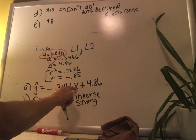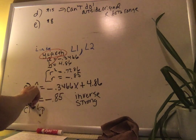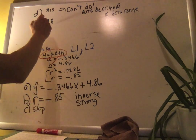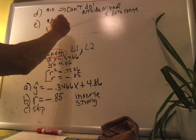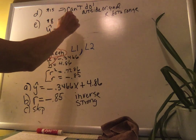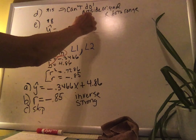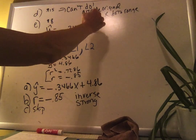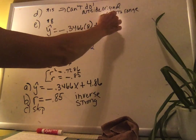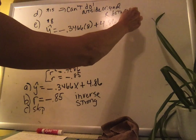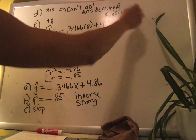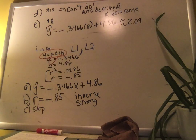Eight dollars is within the data range, so you can do it. That's the whole point of Part A — use the prediction equation, plug in the X, and you get the Y out. The answer comes out to approximately 2.09, depending on how many decimal places you've kept.